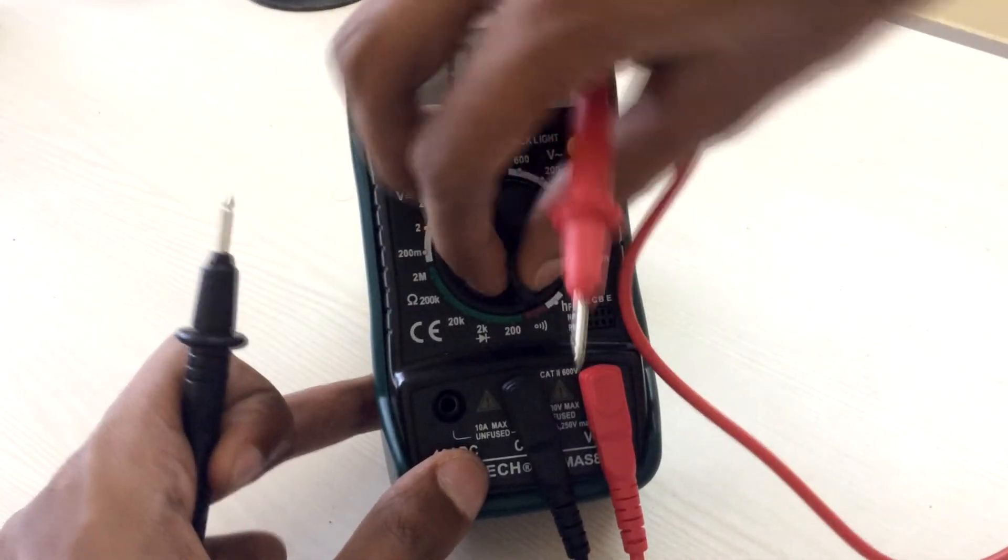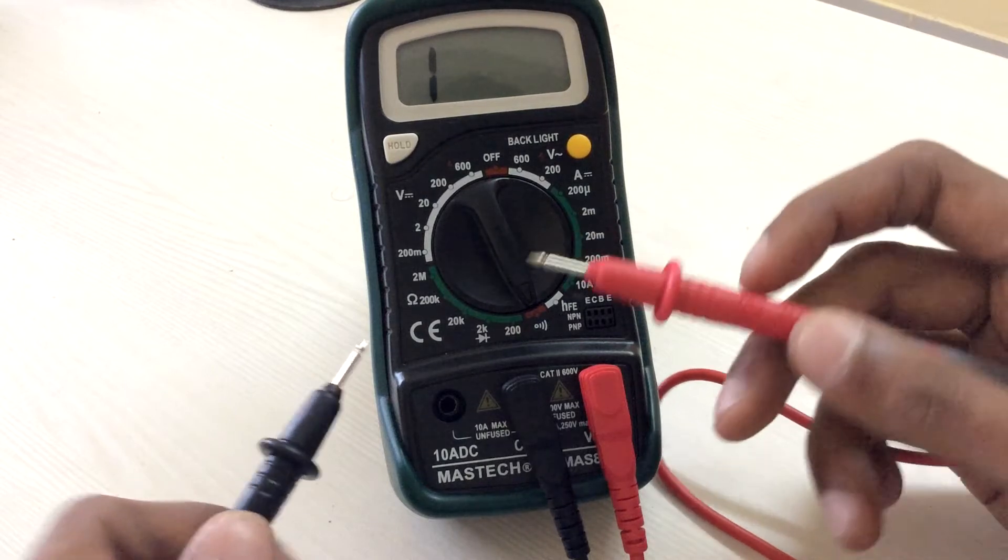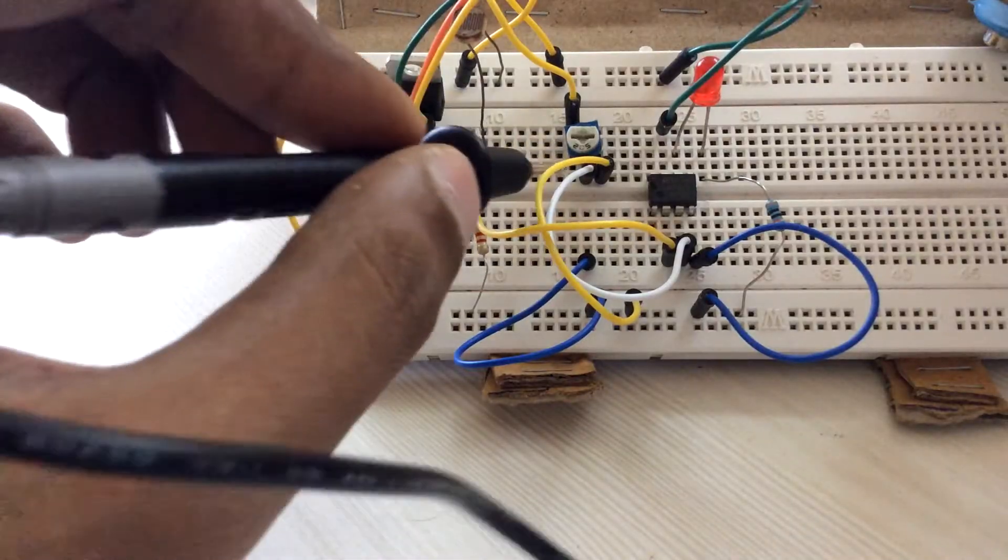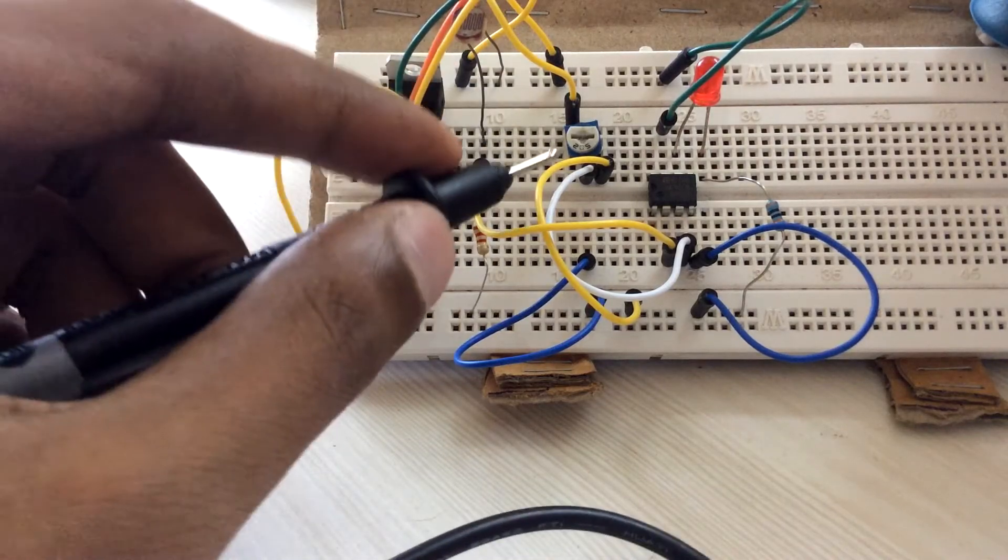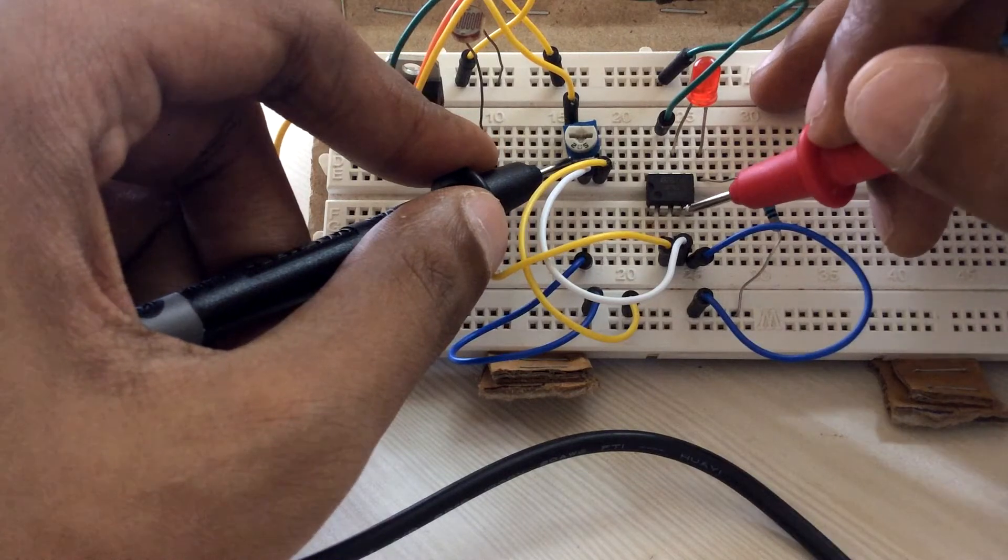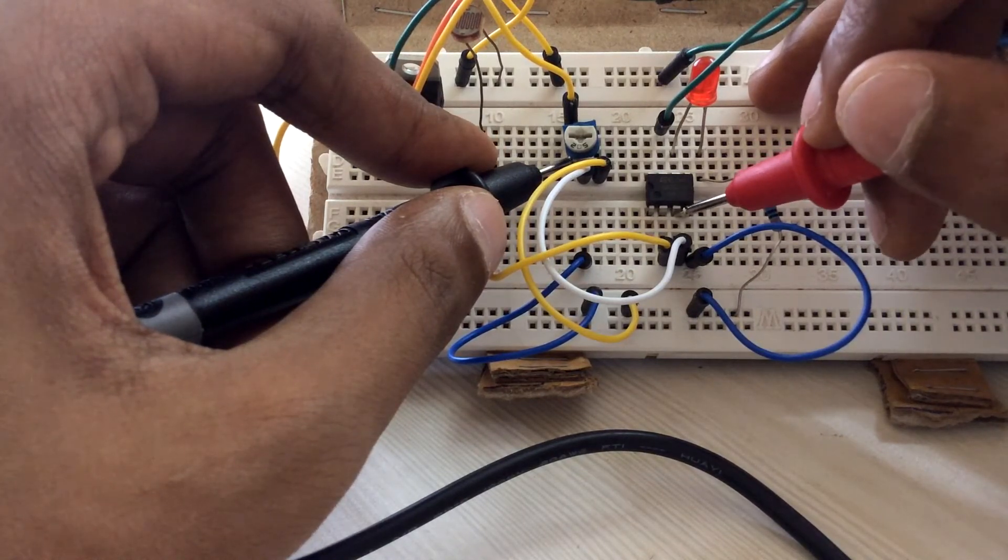Turn the DMM into continuity mode. Make sure that when both terminals touch, a beep sound is generated. Now if you touch the second pin of the potentiometer to the third pin of the IC, you get a beep sound which shows that the wire connecting them is not broken.